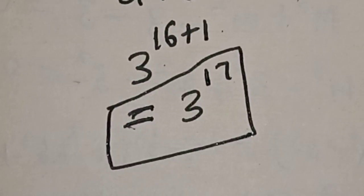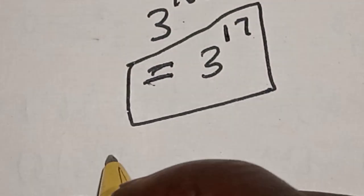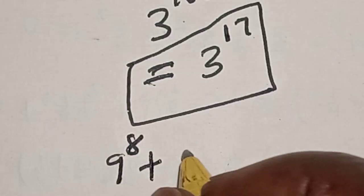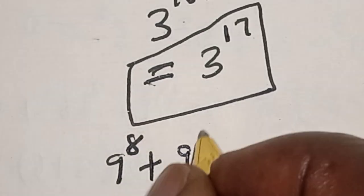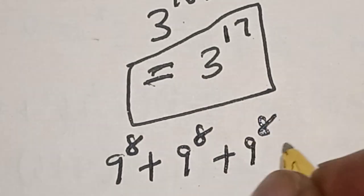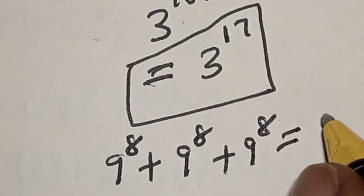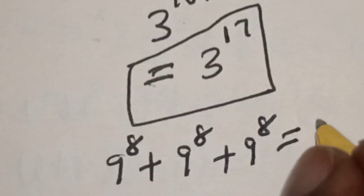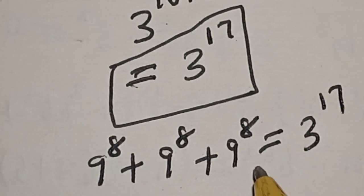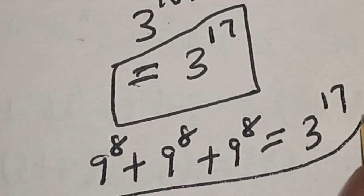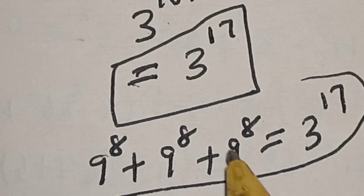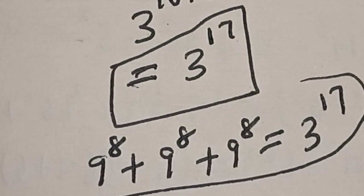Therefore, 9 raised to power 8 plus 9 raised to power 8 plus 9 raised to power 8 is equal to 3 raised to power 17. If you enjoyed the class, please don't forget to like, share, comment and subscribe. Thank you.